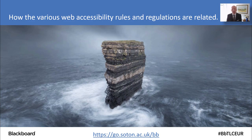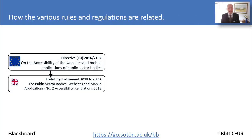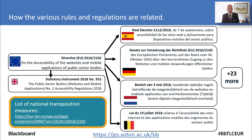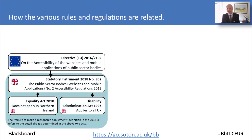You might have heard of the public sector web accessibility regulations, but how are they related to each other? There is a European Union Directive, and all of the member states of the EU have had to implement this into their law. So in the UK we have the Public Sector Bodies' Accessibility Regulations. I've added some examples from the transposition into the laws of the other European members, and of course there are 23 more beyond what I show here.